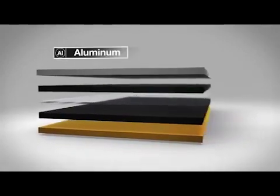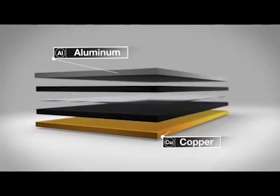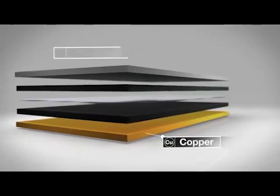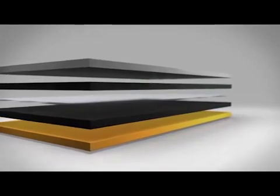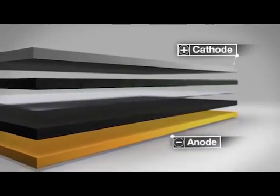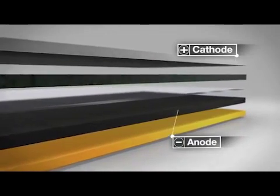The electrical current reaches the cells via conductive surfaces, in this case aluminum on one side and copper on the other. And just as in every other battery, there's a positive and negative electrode called the cathode and the anode.